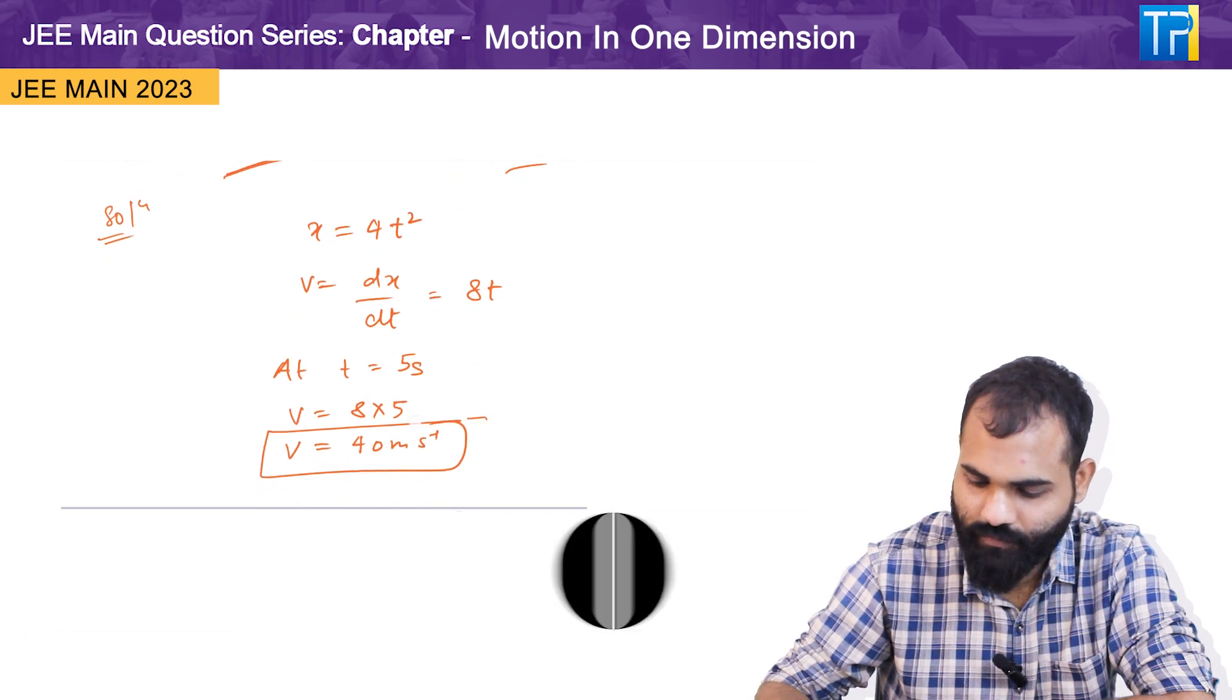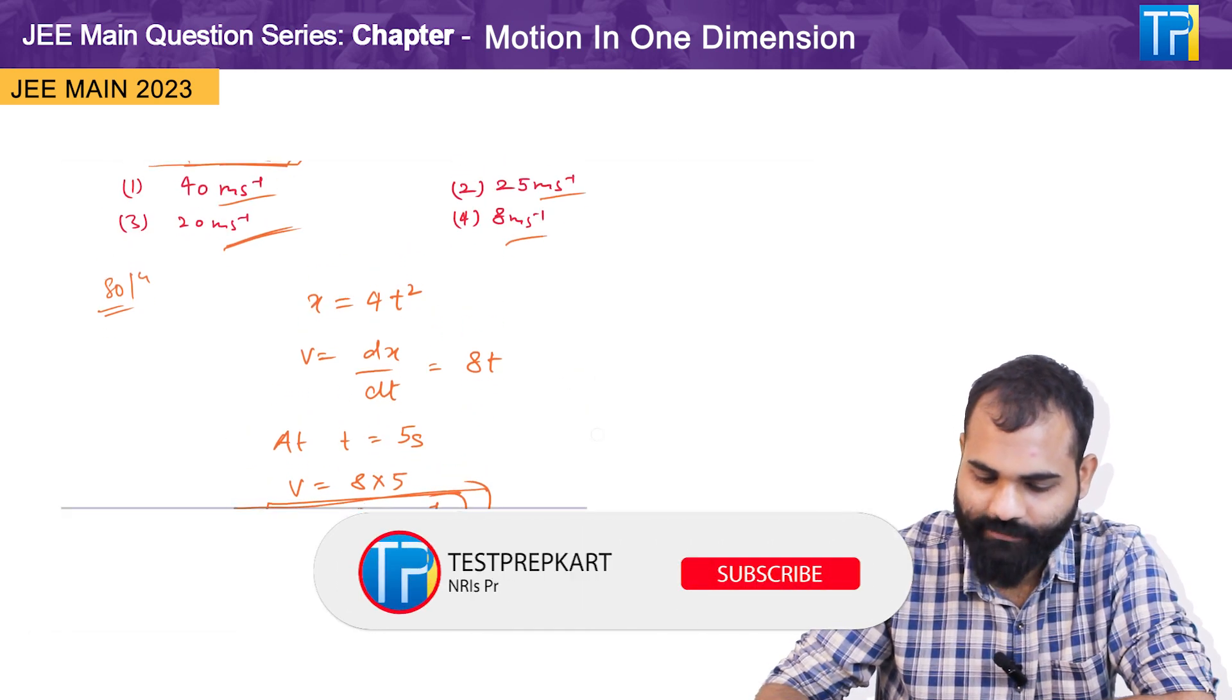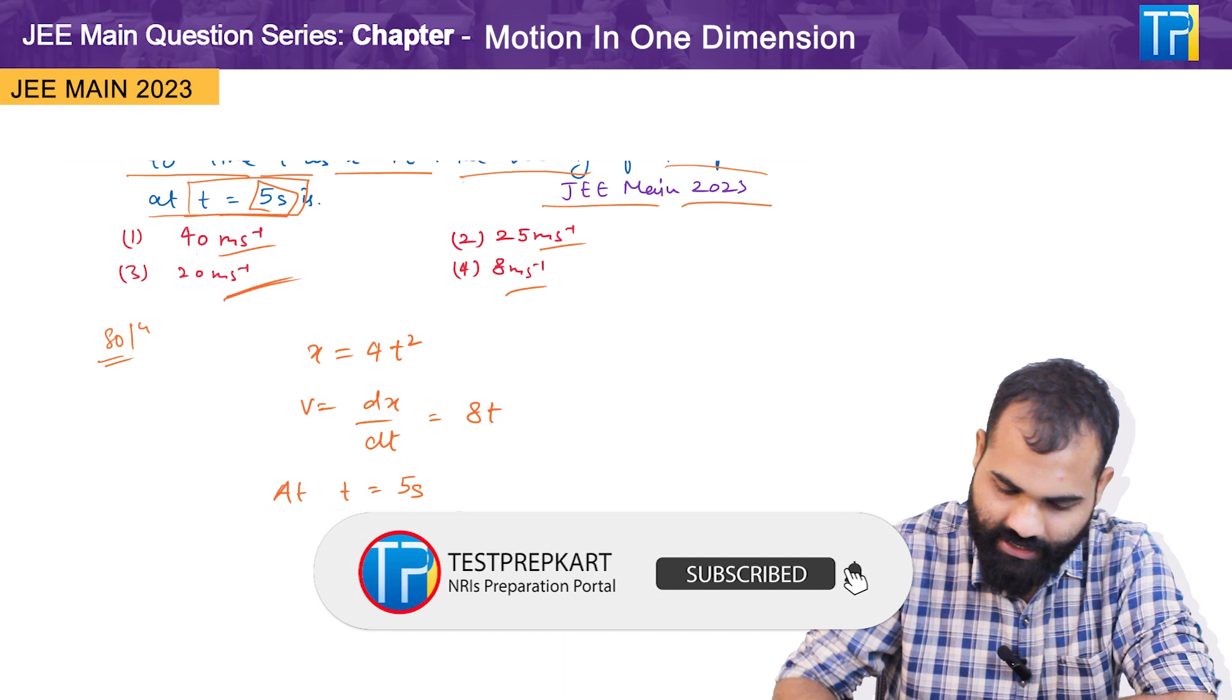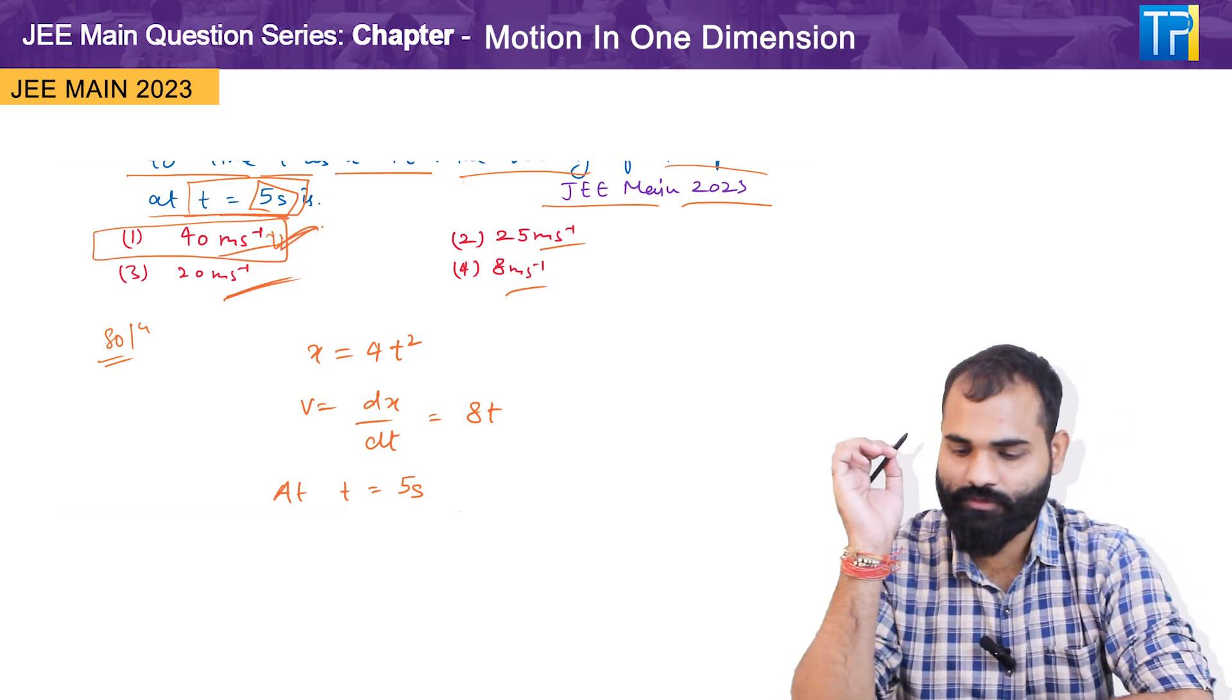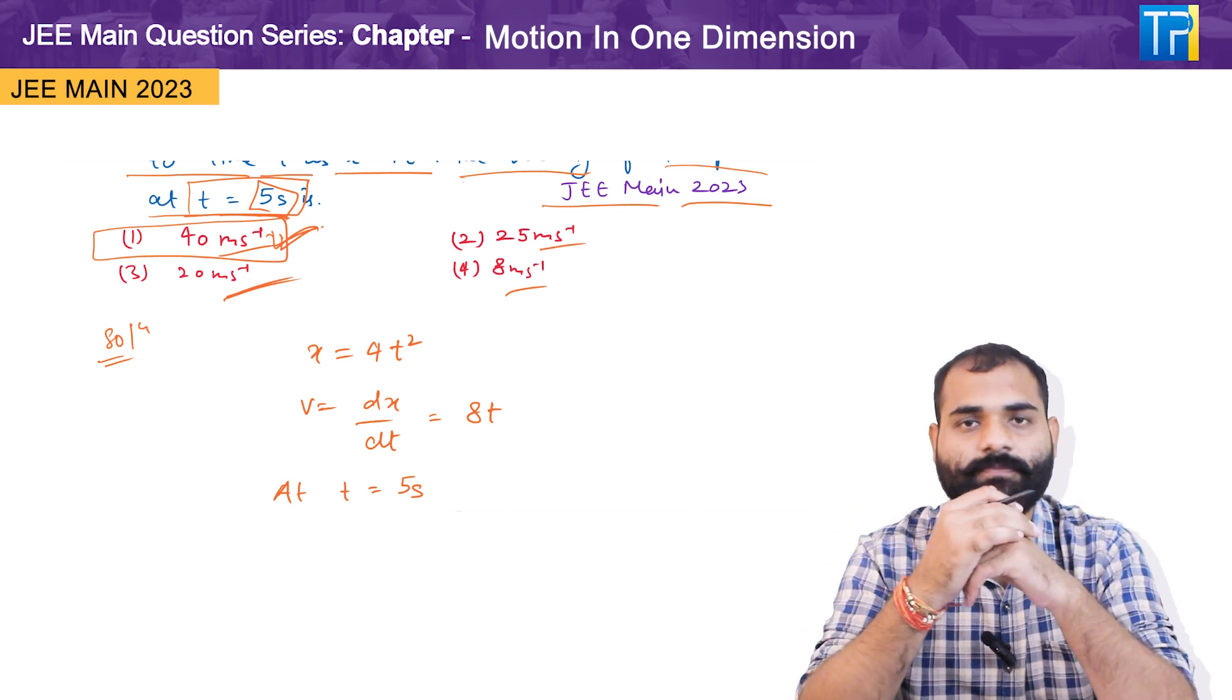So this is the value of velocity at time equals 5 seconds and our option first is correct. So stay tuned to our channel for more questions like this. Thank you.